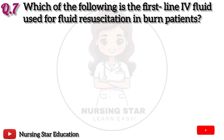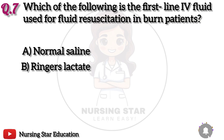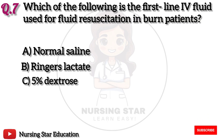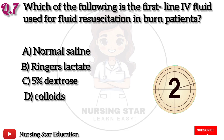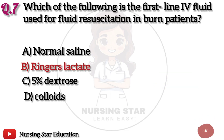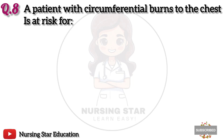Question 7: Which of the following is the first-line fluid used for fluid resuscitation in burn patients? Option A: Normal saline. B: Ringer's lactate. C: 5% dextrose. D: Colloids. The correct answer is B: Ringer's lactate.